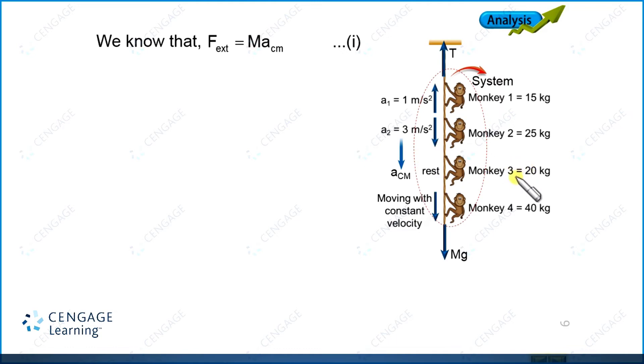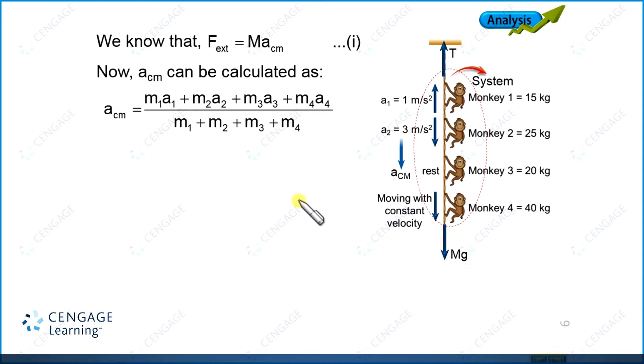Now let us find the a_cm value. Capital M is the mass of the four monkeys. So a_cm, we can write M₁a₁ plus M₂a₂ plus M₃a₃ plus M₄a₄ divided by M₁ plus M₂ plus M₃ plus M₄. Now this first monkey, 15 kg, 1 meter per second square upward. Let us consider upward direction is positive.